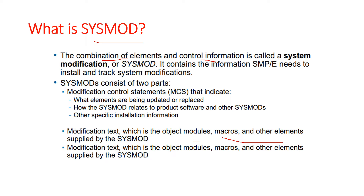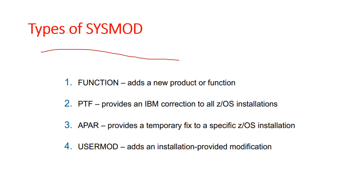SYSMODs are composed of a combination of elements and control information, and they consist of two parts. The first part is the MCS — Modification Control Statement — designed with '++' as the first two characters, which tells SMP what elements are being updated or replaced, how the SYSMOD relates to the product software and other SYSMODs, and other specific installation information. The second part is the modification text, which is the object module like macros and other elements supplied by the SYSMOD.